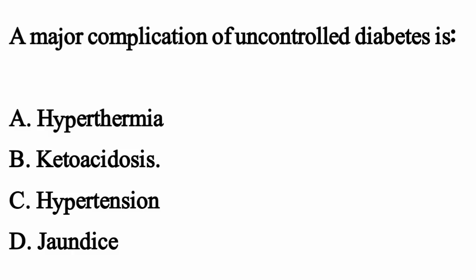A major complication of uncontrolled diabetes is — the correct option is Option B, ketoacidosis.